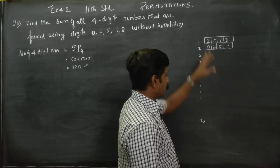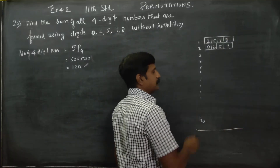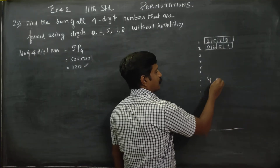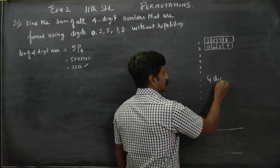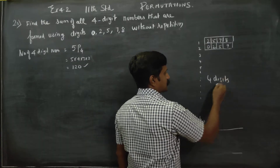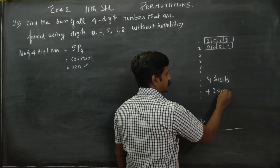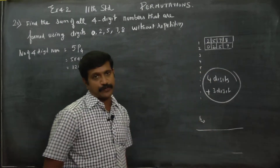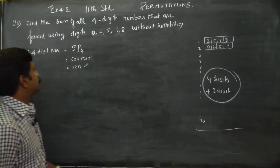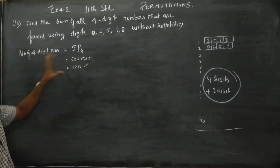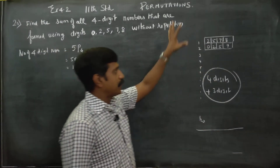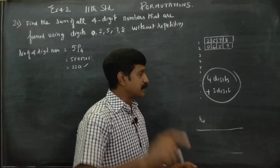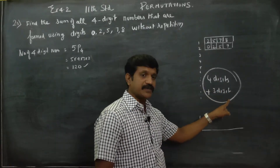It consists of 4-digit numbers as well as 3-digit numbers. In this concept, there are many numbers with 4 digits and there are some numbers with 3 digits.